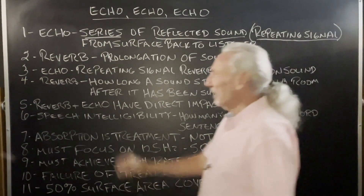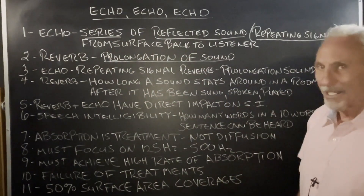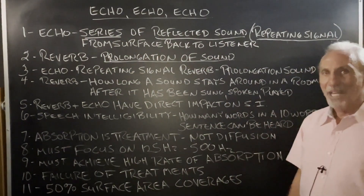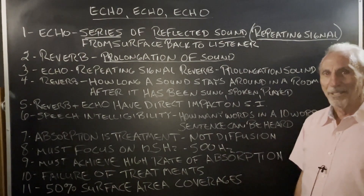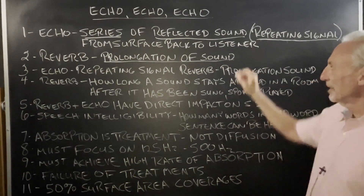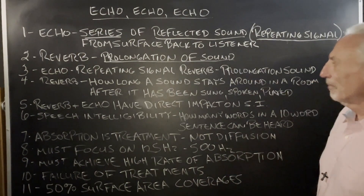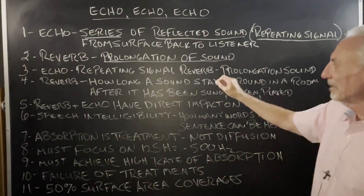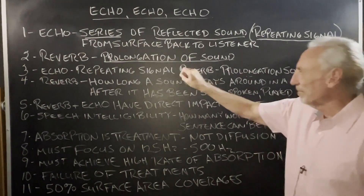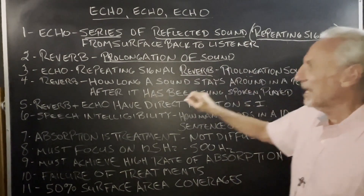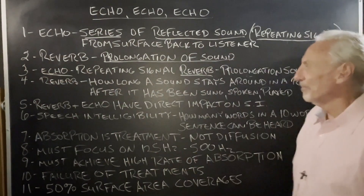What's reverb? Reverb is a prolongation of sound — not a repeating signal. So it's repeating signal versus prolongation of sound. Reverb: prolongation. Echo: repeating signal.